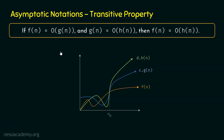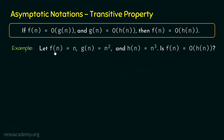For this, let's take a simple example. Let's say F(n) is N, G(n) is N², and H(n) is N³. These are the three functions. Can we say F(n) is Big O of H(n)? In order to prove this, we will first show F(n) is Big O of G(n), then show G(n) is Big O of H(n), and then show F(n) is Big O of H(n). This will prove that the transitive property is true.